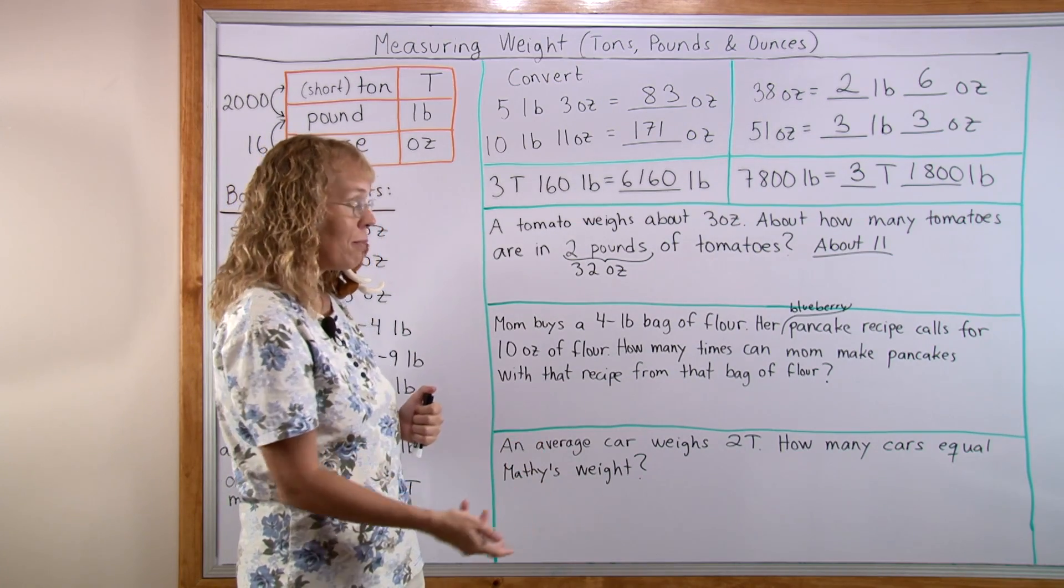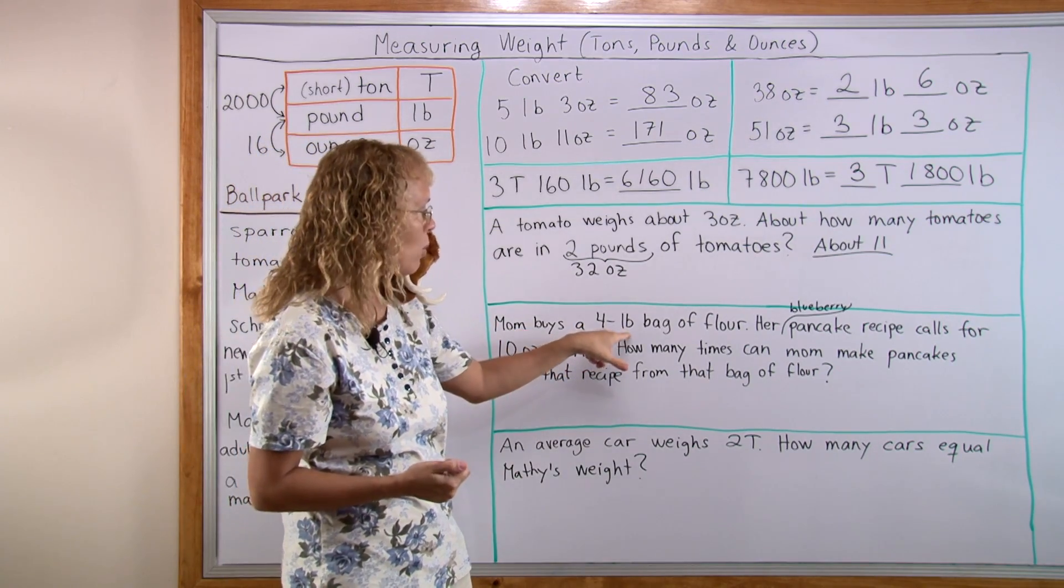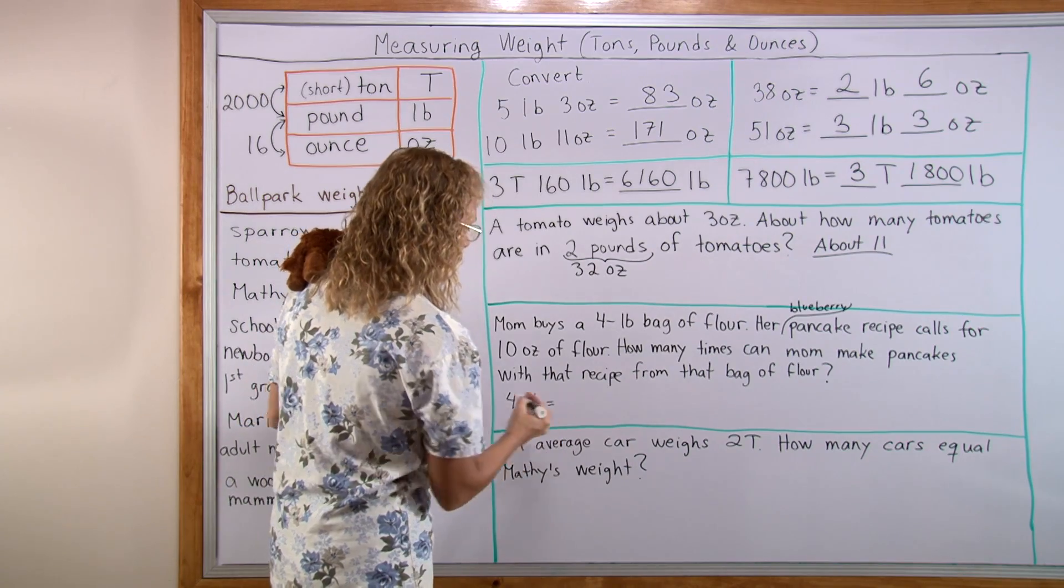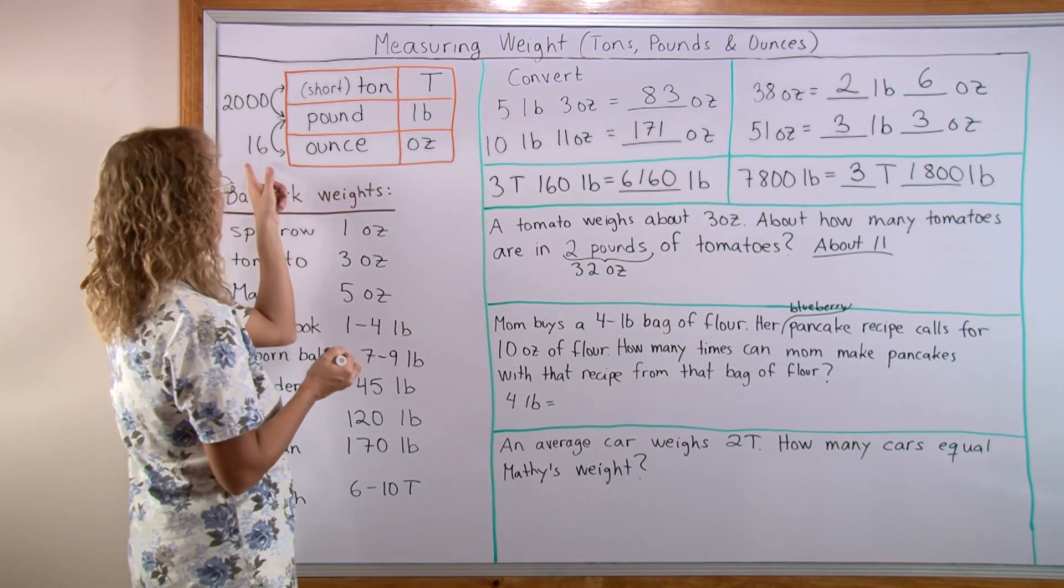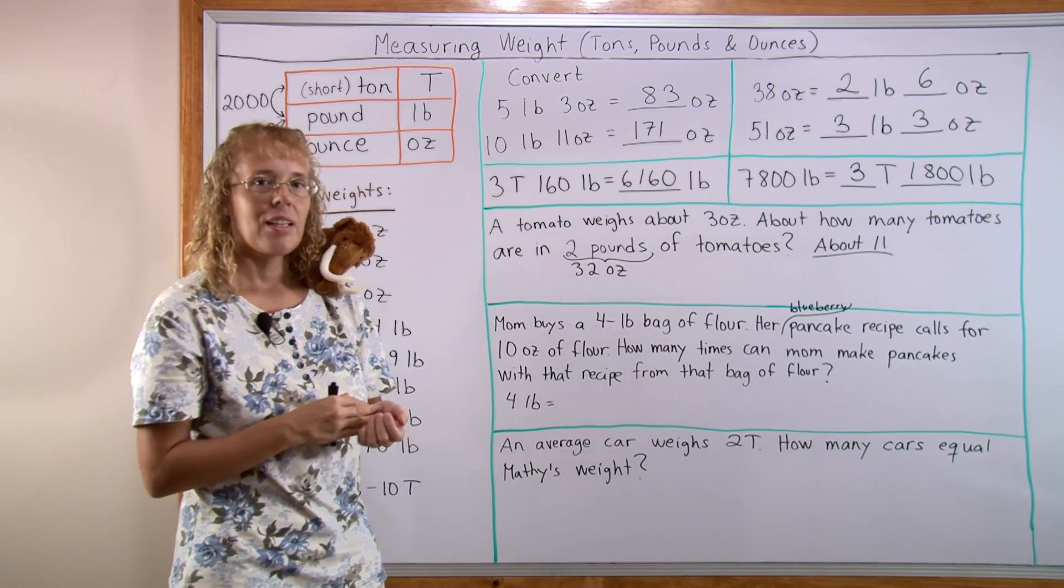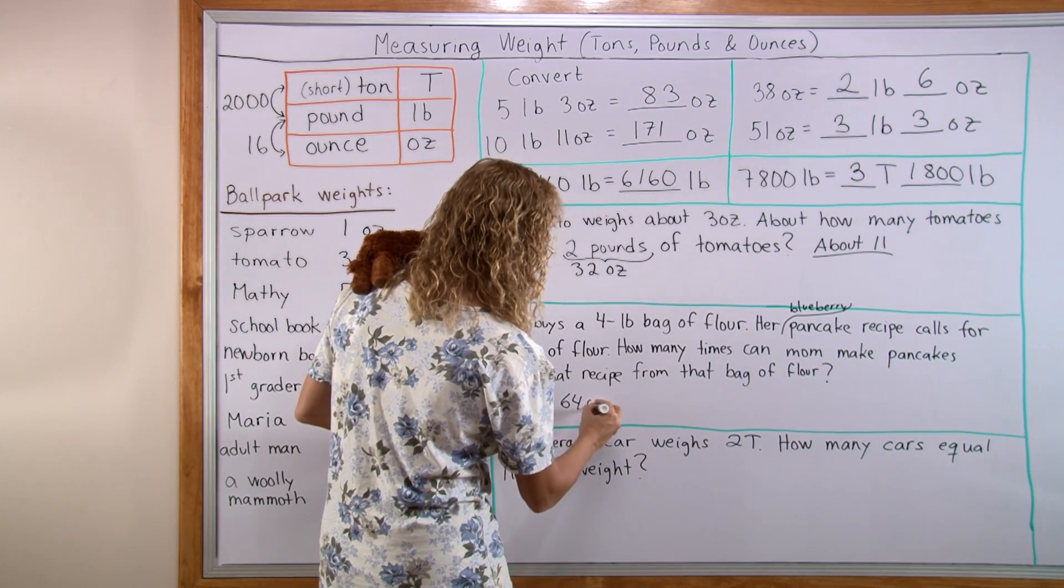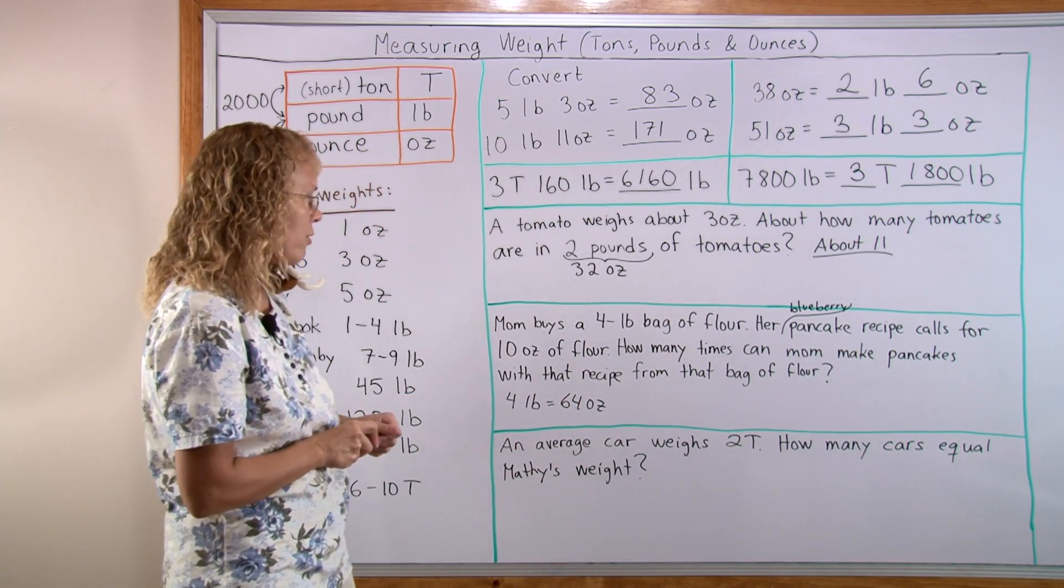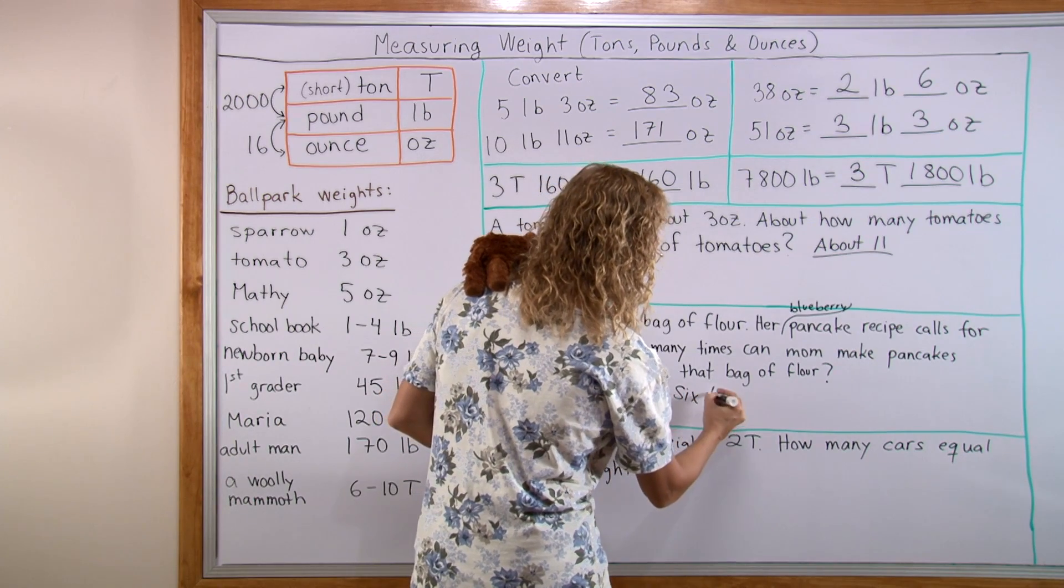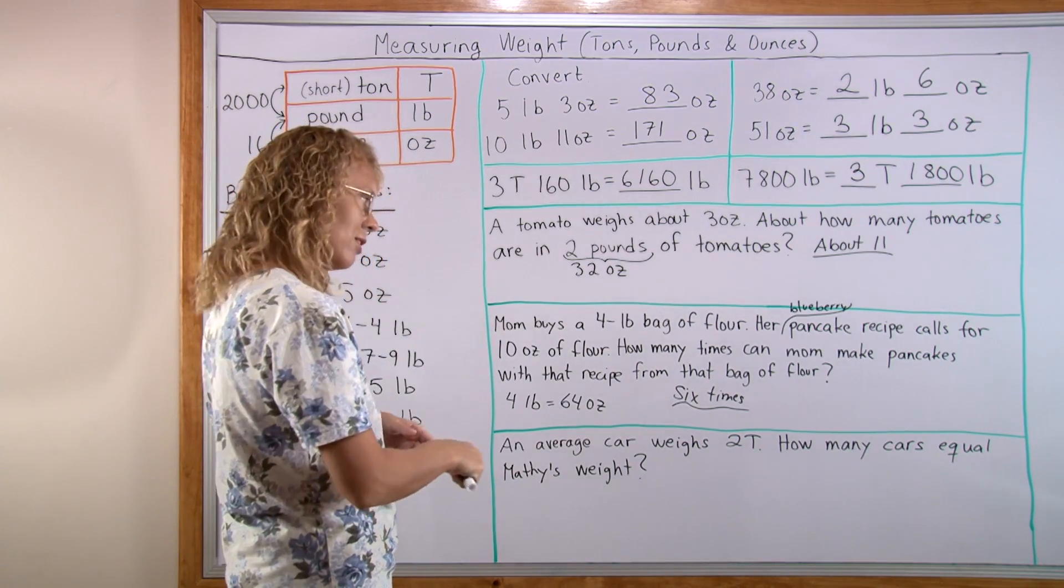How many times can she make pancakes using that recipe with this bag of flour? We change pounds to ounces. 4 pounds equals how many ounces? 4 times 16. To do it mentally, first 2 times 16 is 32, then double that to get 64 ounces. If the recipe calls for 10 ounces, from 64 ounces you can make it 6 times, with a little flour left over but not enough for one more batch.